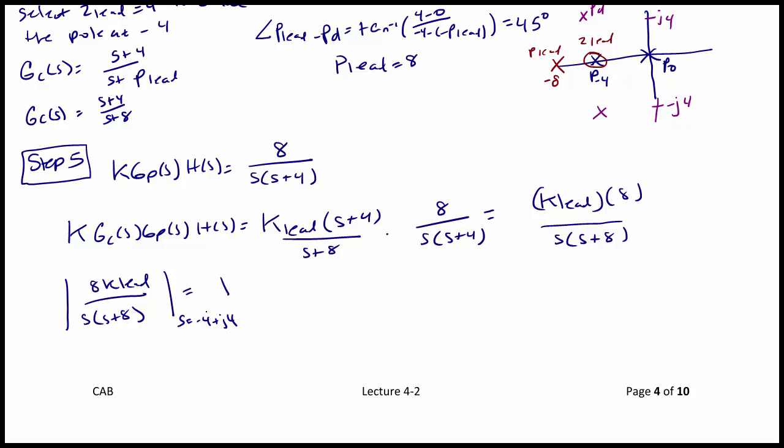And this ensures that that desired pole will be on the root locus. So when we solve this, we get that K lead must equal 4. So finally, the complete compensator is 4 over S times S plus 8. And to check our work, we now have K, GC of S, GP of S,